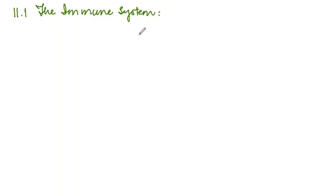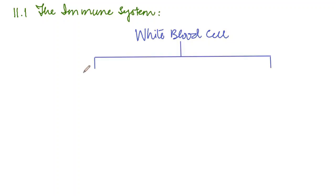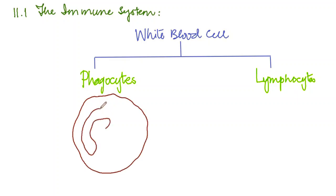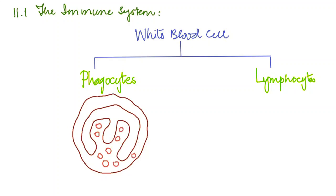We have three main types of blood cells; a very important type is the white blood cell. White blood cells provide the main defense and are mainly of two types: phagocytes and lymphocytes. Phagocytes can be easily identified by the specific shape of their nucleus, which is multi-lobed. They also contain a large number of small vesicles inside their cytoplasm, sometimes referred to as granules — that's why their cytoplasm is called granulated cytoplasm.